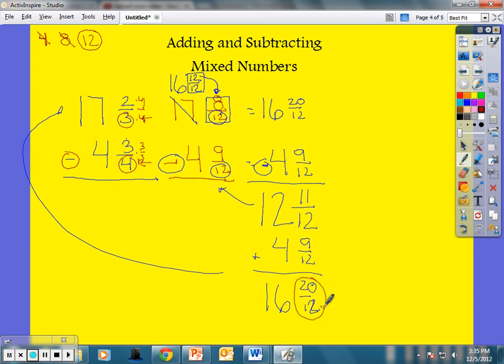So I need to say how many times is 12 going into 20. It goes in one whole time. One times 12 is 12. Subtract that from the numerator. That gives me eight plus the 16 whole I have here. So that gives me 17 and 8/12.